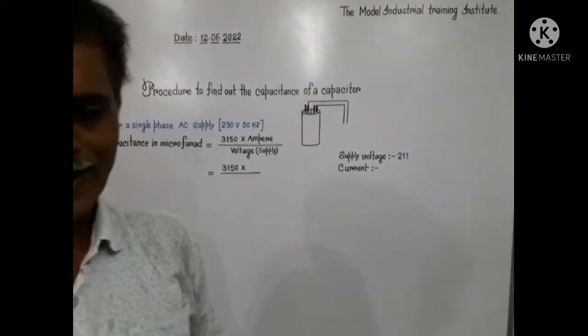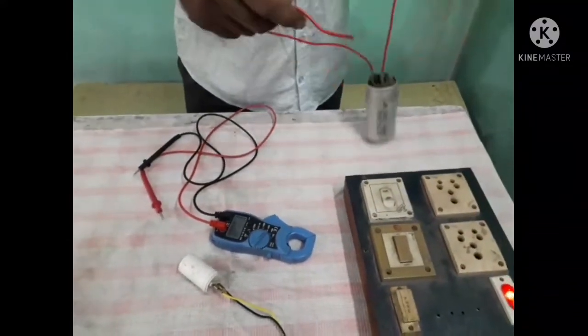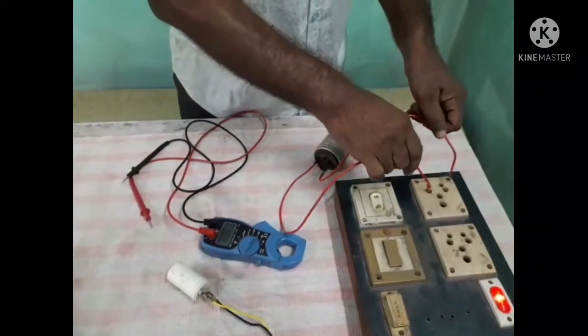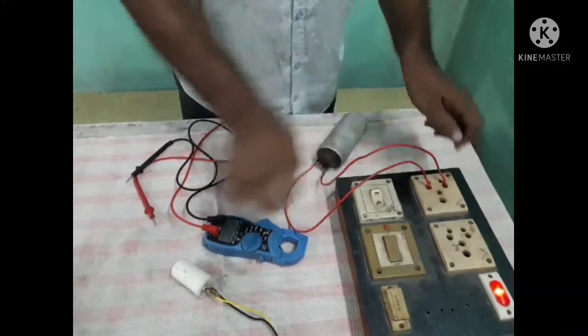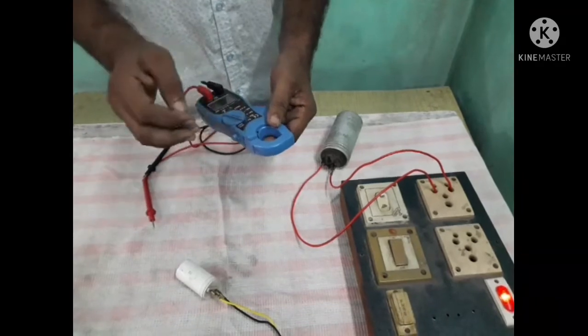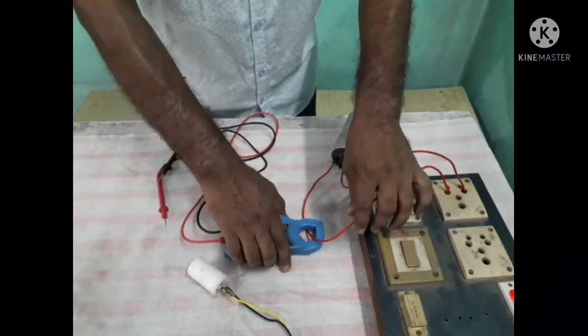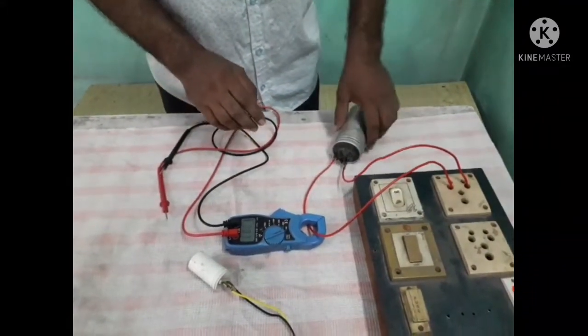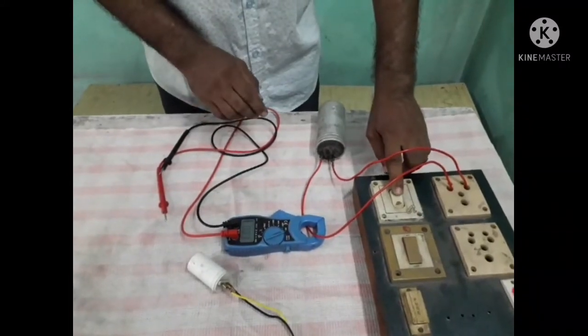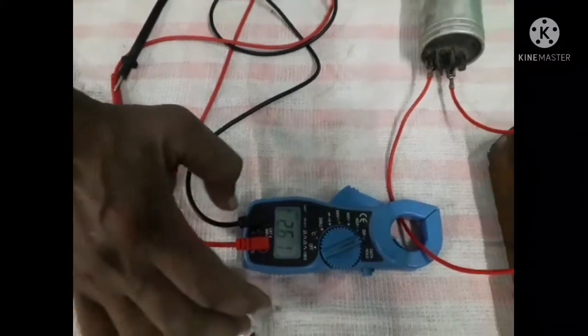How much current it will take while it is charged. And this lead I am putting in phase and this is in neutral. Now clamp meter to be set in ampere. I have clamped on phase line. Now switch on. And it is showing 2.661.